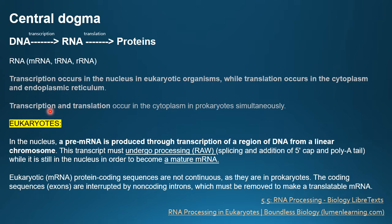In prokaryotes, transcription and translation both occur in the cytoplasm, as there is no nucleus. In eukaryotes, transcription takes place in the nucleus and translation occurs in the cytoplasm and endoplasmic reticulum. This is the basic difference between these two organisms with respect to the processes of the central dogma.